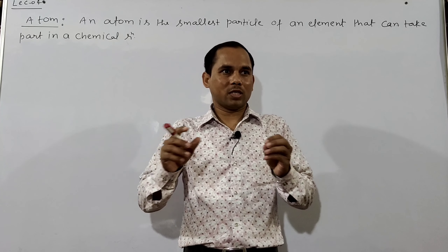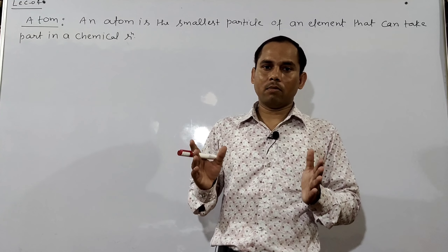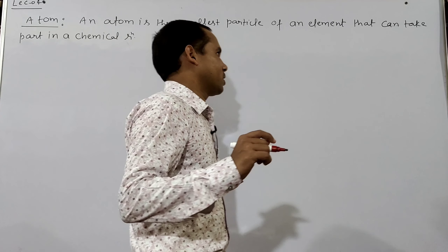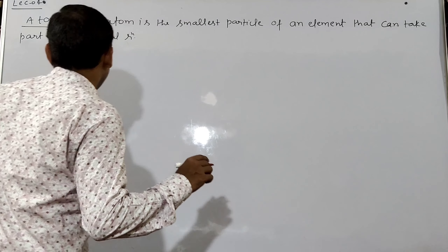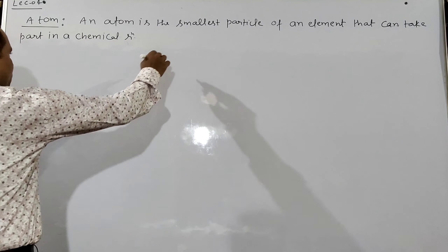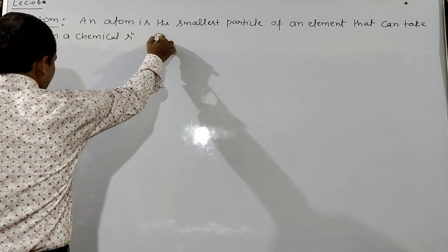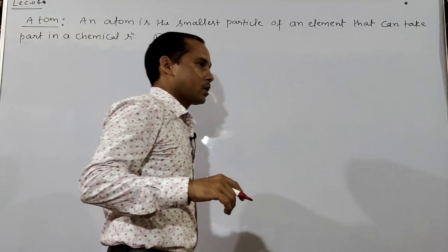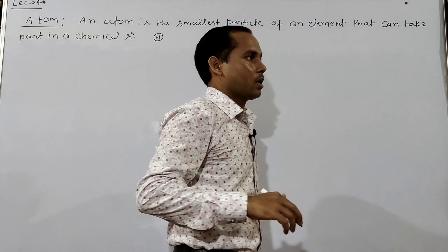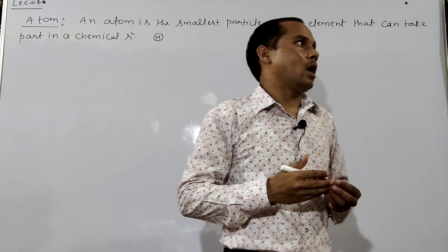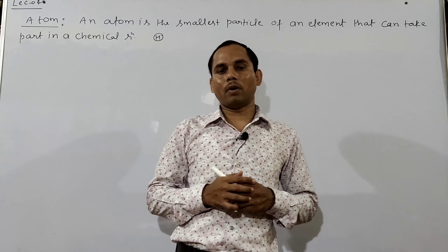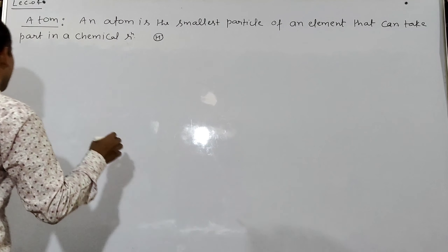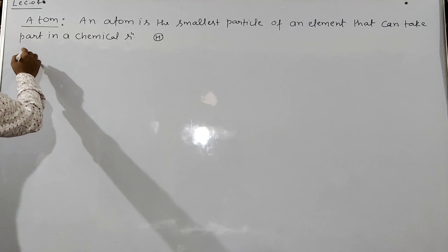Now talking about the size of the atom — the hydrogen atom has the smallest size. The hydrogen atom's size is very, very small. Now let us also talk about the symbol of atoms.